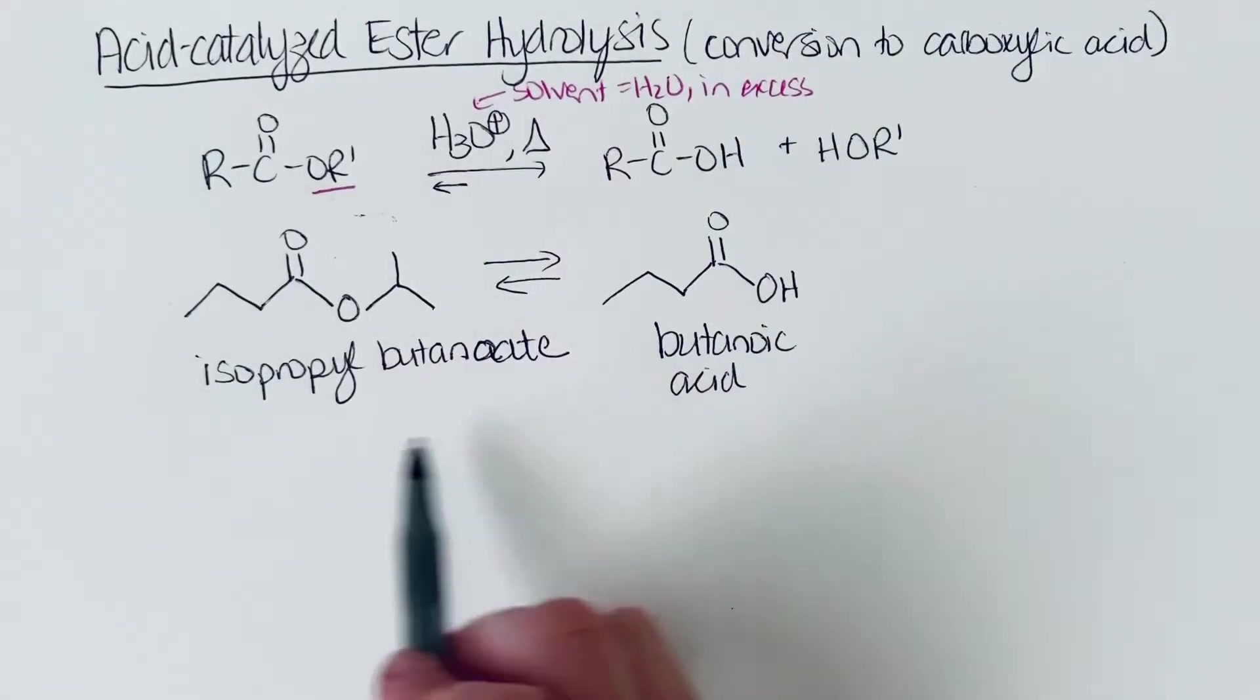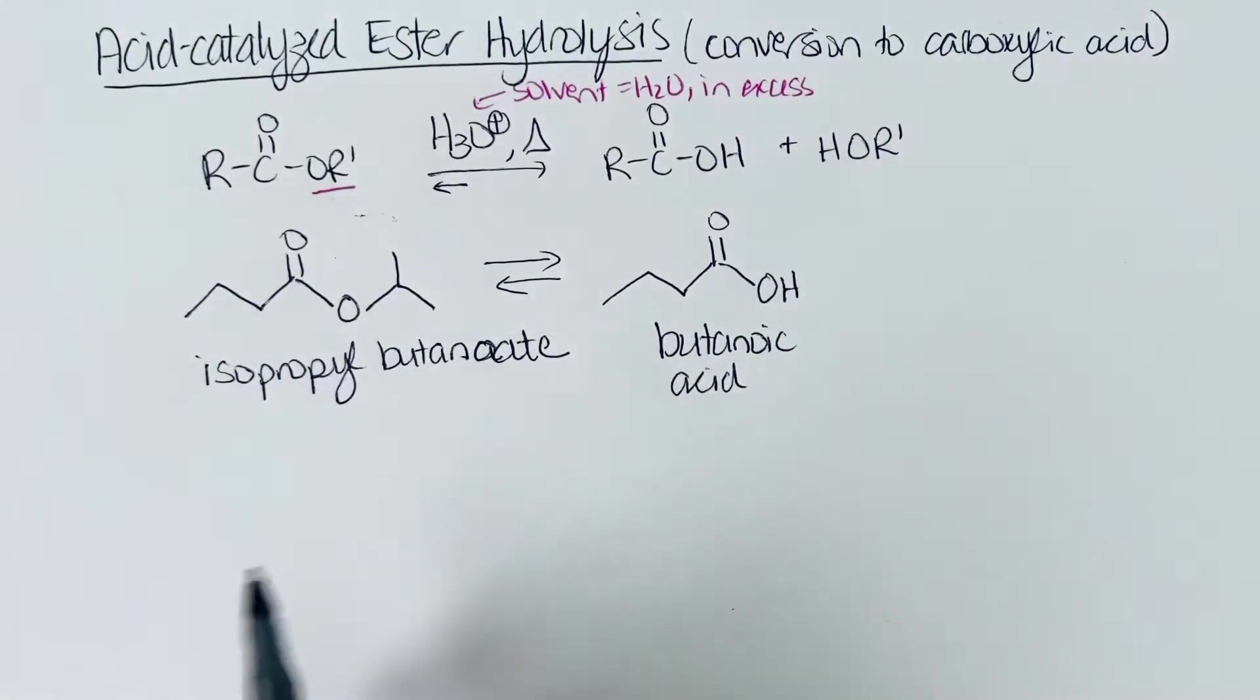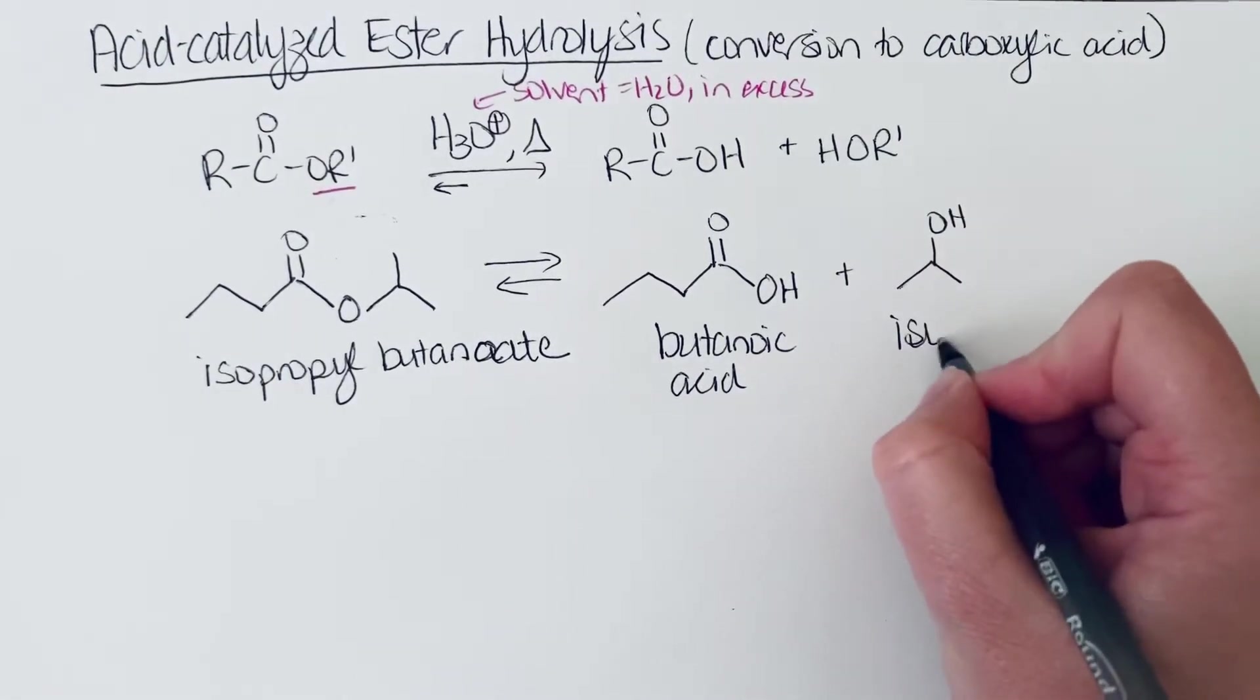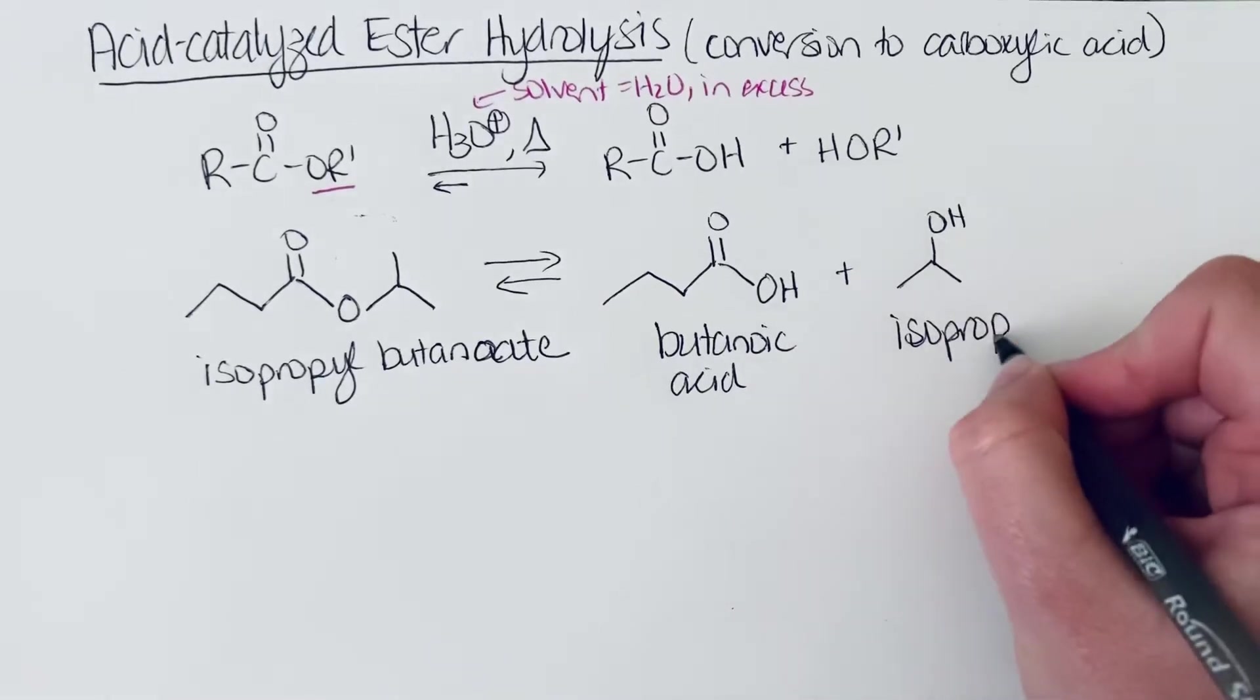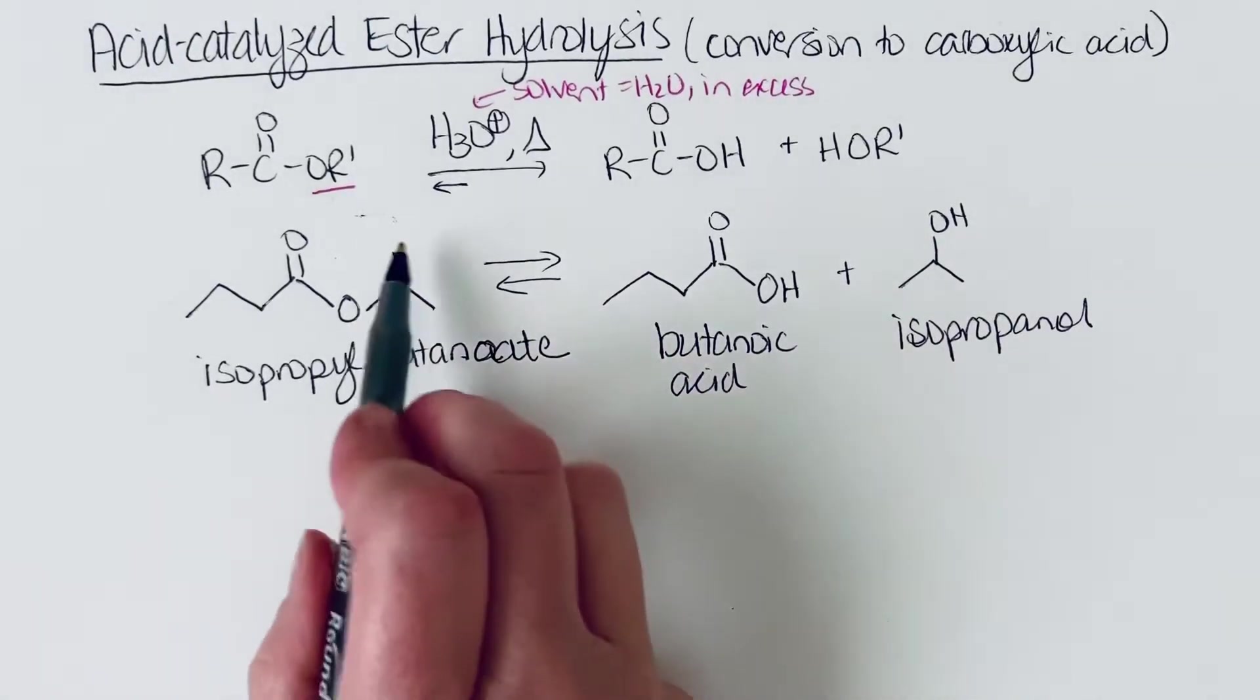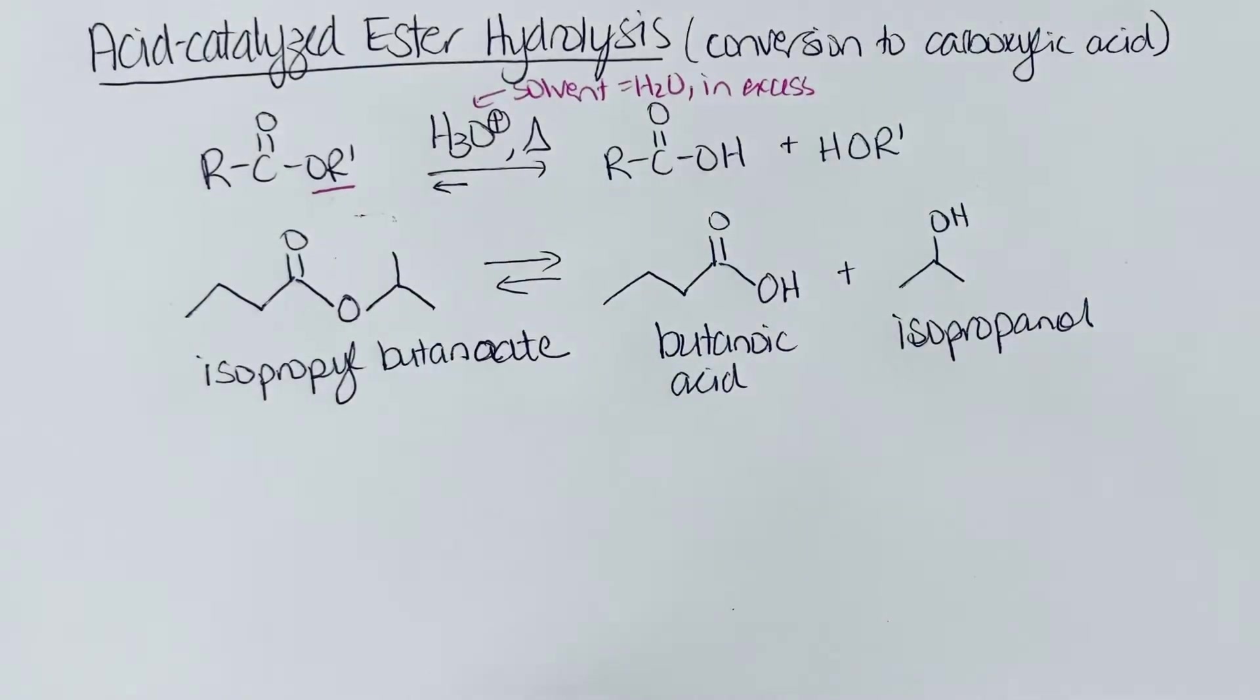And then as a byproduct, because it was isopropyl butanoate, you're going to get isopropanol. So whatever is attached to the oxygen of your ester, that's what's going to be attached to the alcohol in your product. So let's take a look at the mechanism.